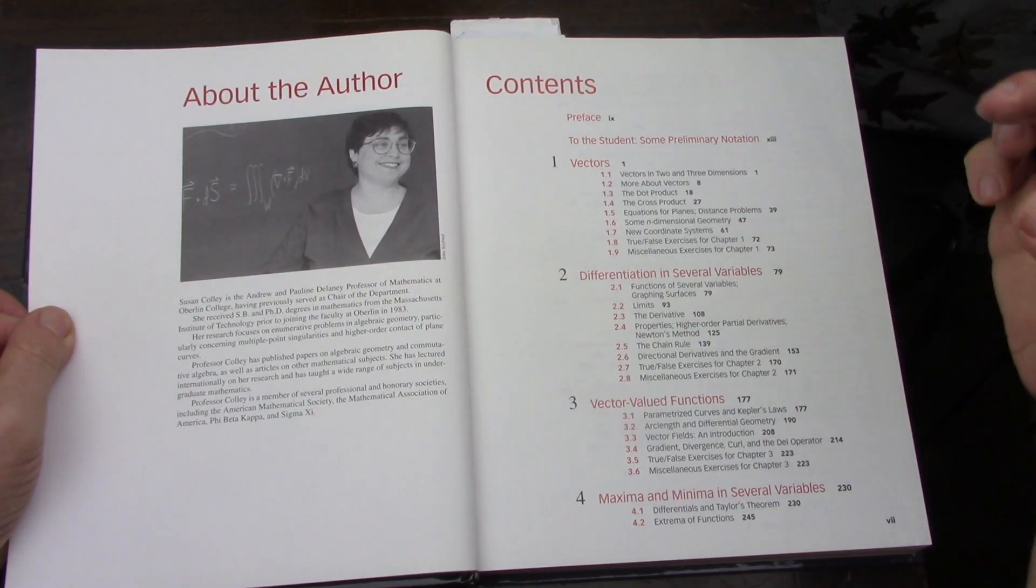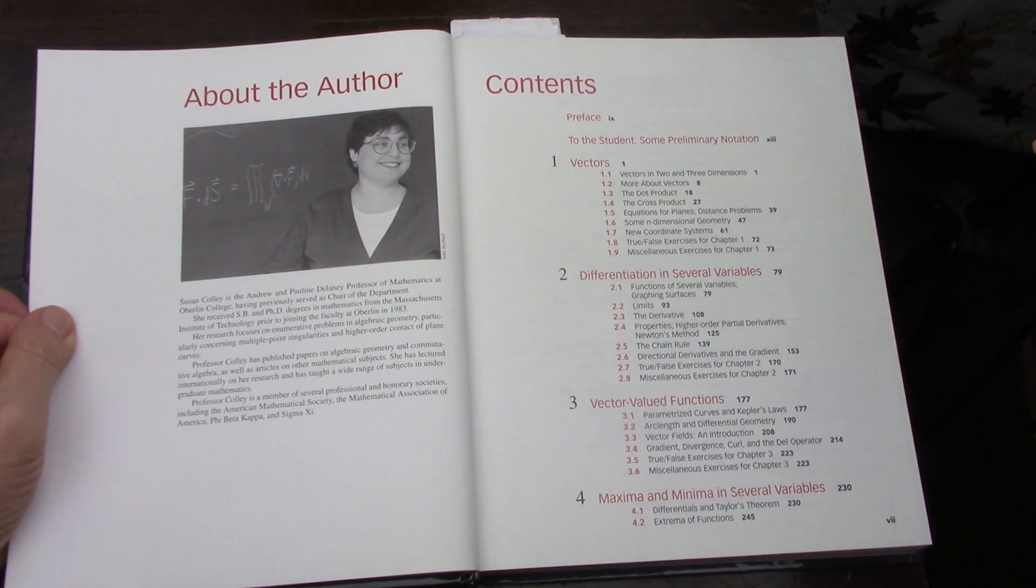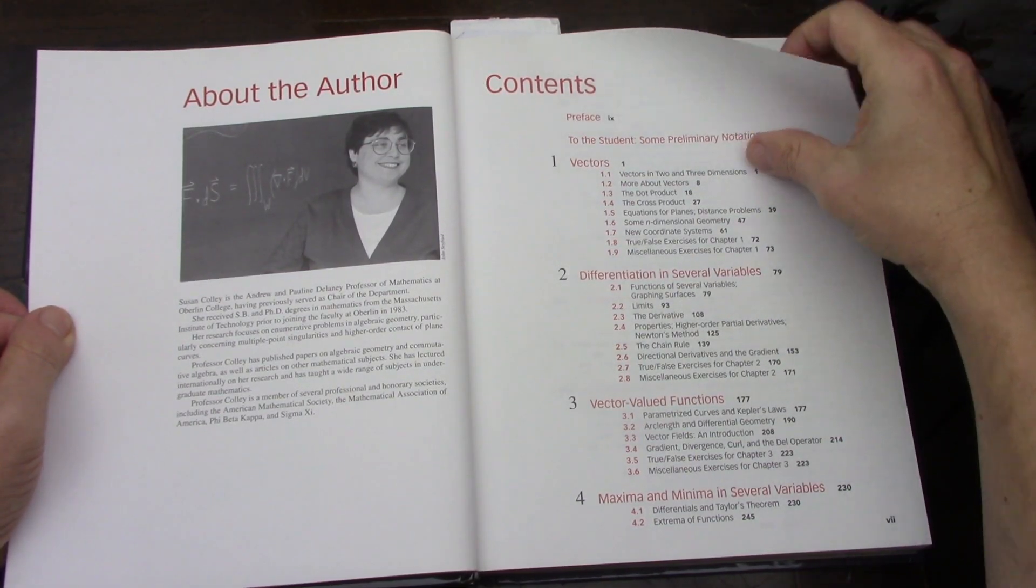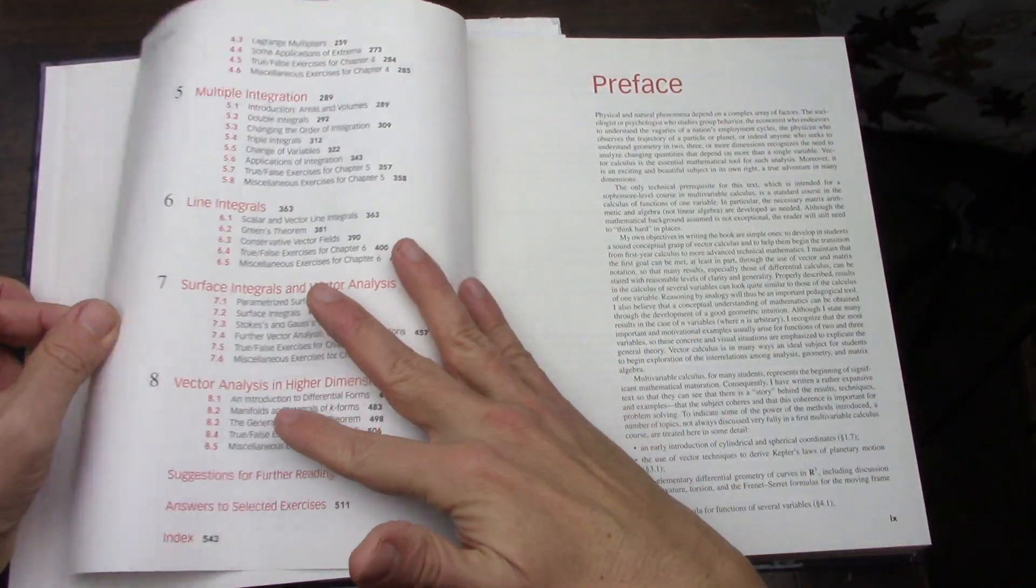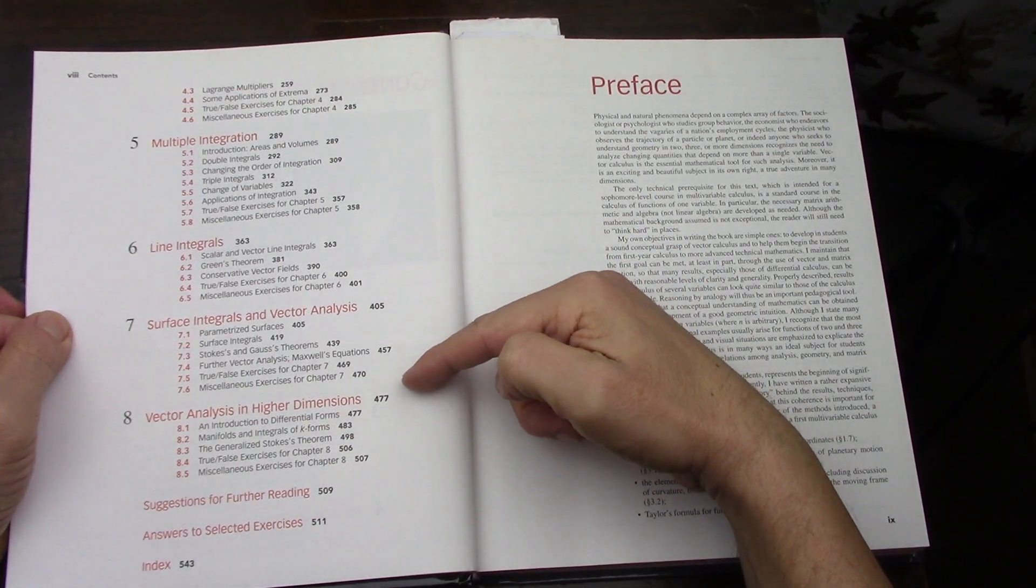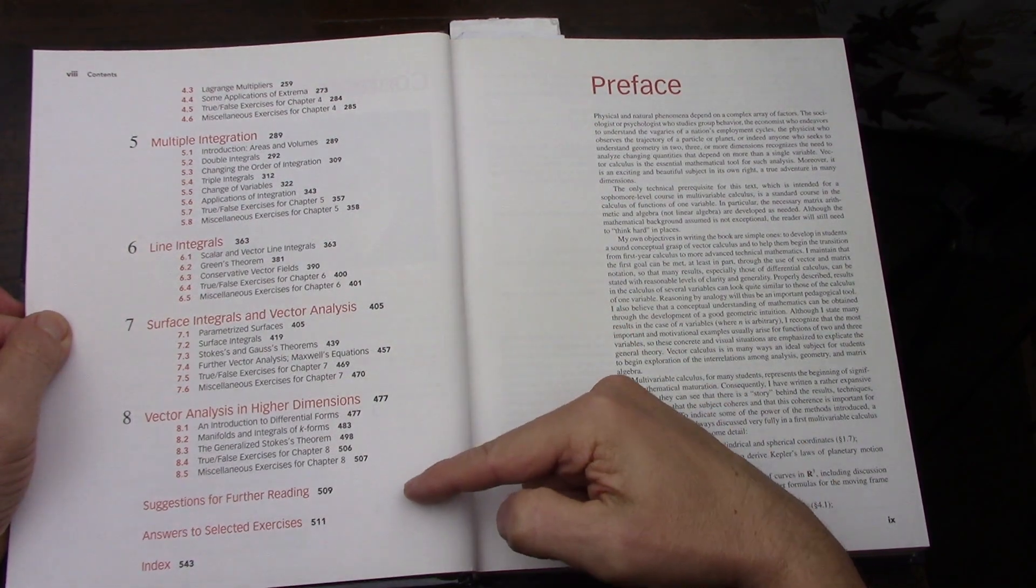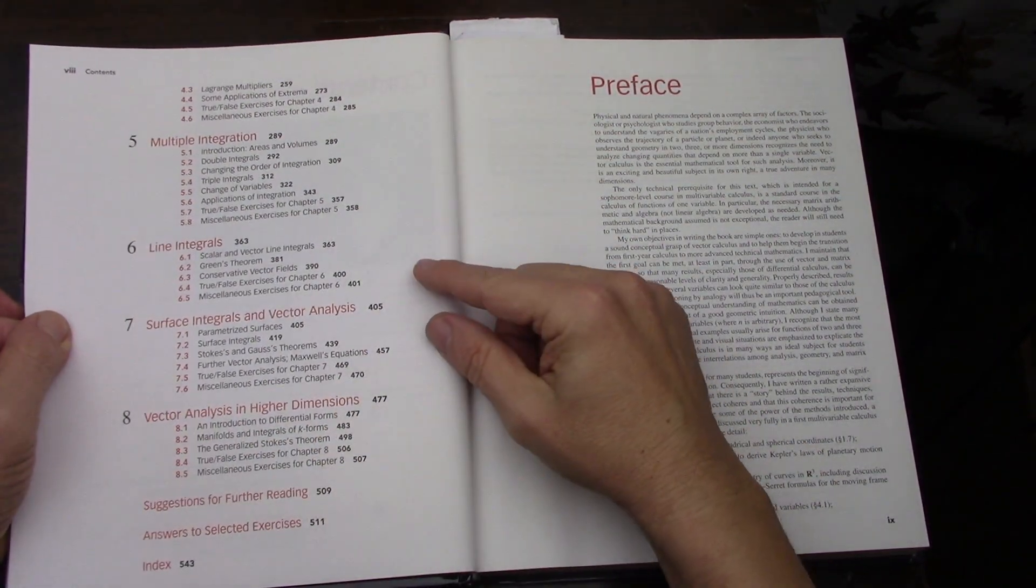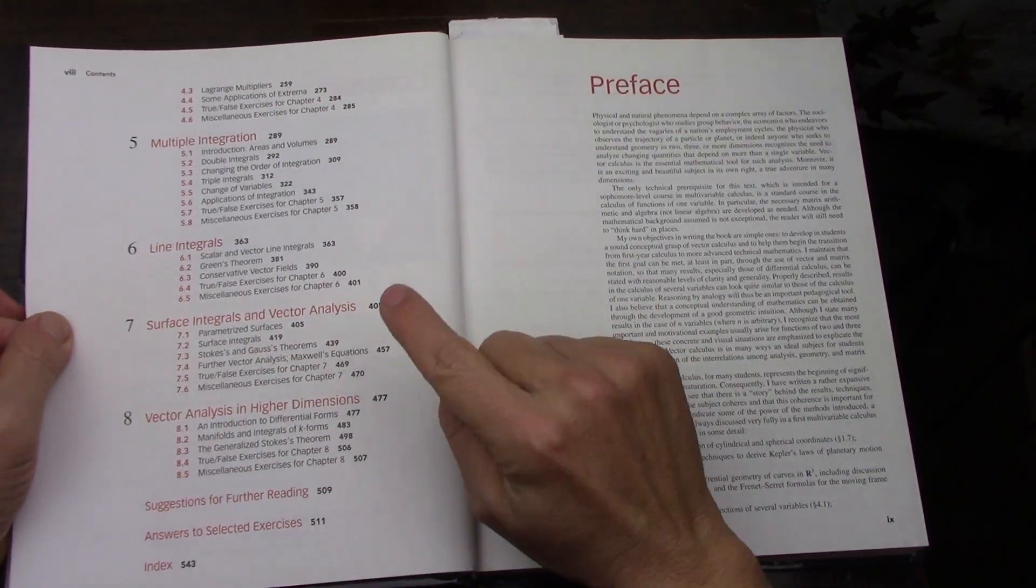Then the Table of Contents: Vectors, Differentiation in R to the N, Vector Valued Functions, Extrema of course, multiple integration, line integrals, surface integrals, vector analysis, and then higher dimensions. A little bit of differential forms, I see manifolds, and of course this is all about Stokes theorem and Gauss's theorem.